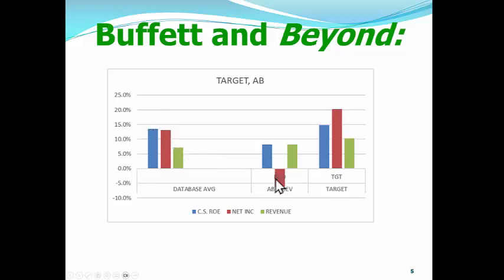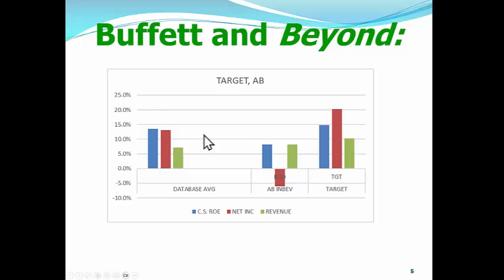For the past five years — these are five-year averages — Budweiser has had a negative earnings number, so that's not too good. It has a slightly above-average revenue number, but the problem is they're not turning that revenue into profits. Now let's look at Target. Target has a better than average clean surplus ROE, better net income or clean surplus earnings, and better revenue income than the average stock in our database. So Target is indeed a better stock, and we would expect Target to outperform Budweiser and the average stock.